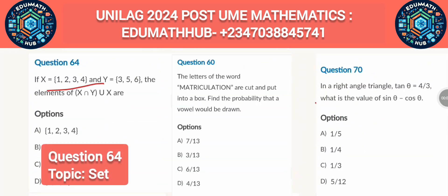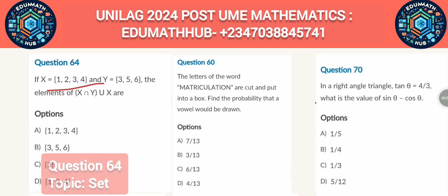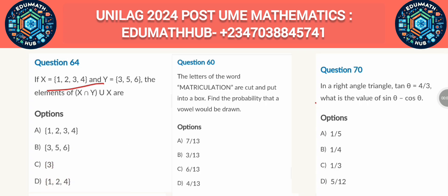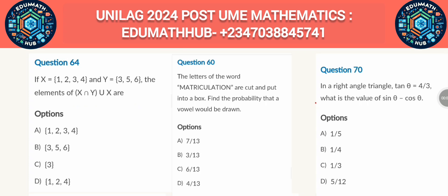We are told that if X equals {1, 2, 3, 4} and Y equals {3, 5, 6}, we have to find the elements of X∩Y ∪ X. The intersection symbol means what elements the sets have in common, and the union symbol means putting all elements together. The first part is X∩Y — what is common to these two sets.